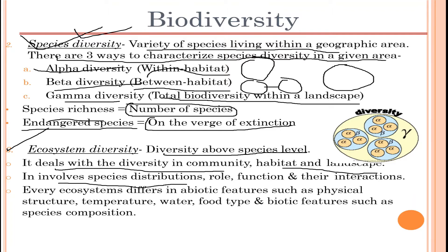Ecosystem diversity also involves species distribution, role, function, and their interactions. Every ecosystem differs in abiotic features such as physical structure, temperature, water, and food type, and biotic features such as species composition. This is the highest level of biodiversity.